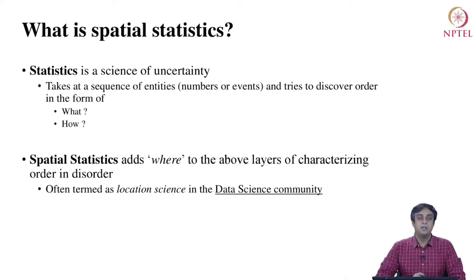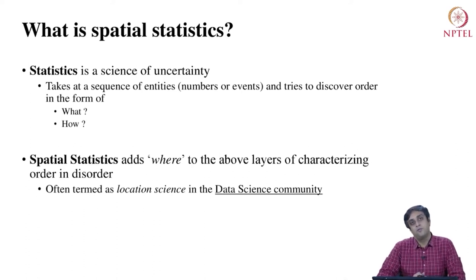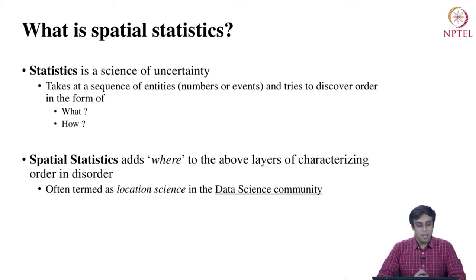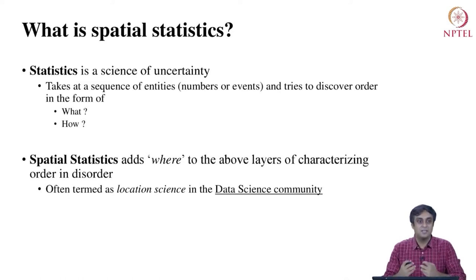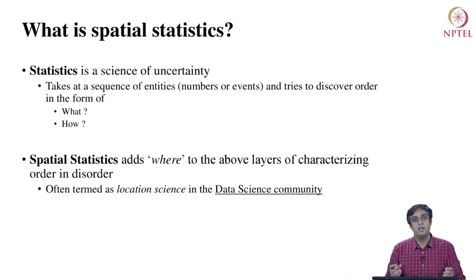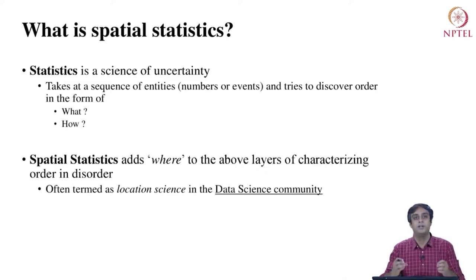What is spatial statistics? First, we should understand what is statistics. Statistics is a science of uncertainty — it posits the observations we see around us as fundamentally random in nature. But in this fundamentally stochastic real world, there is some order, and statistics as a discipline strives to identify order in disorder.